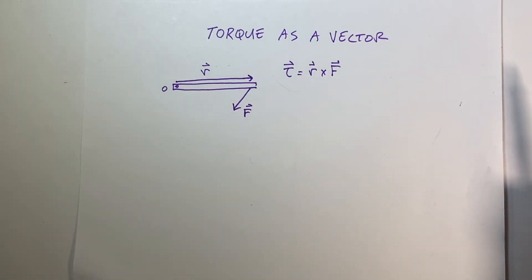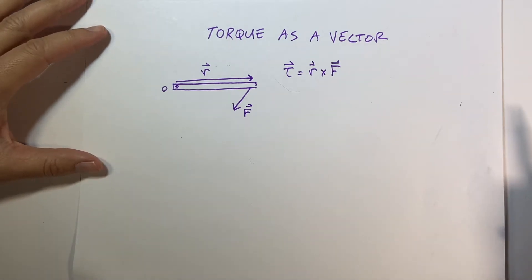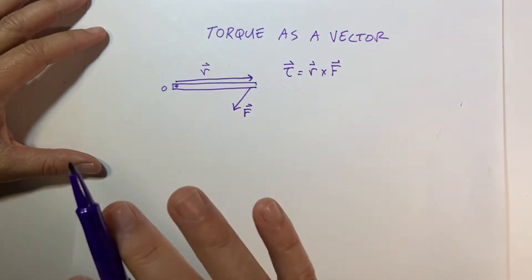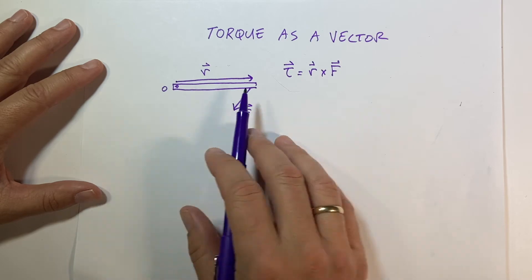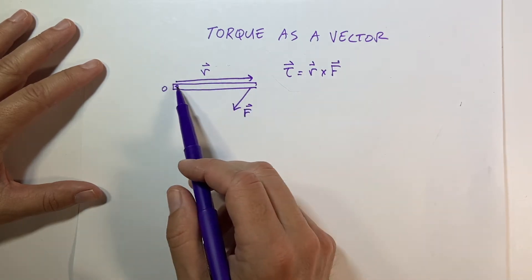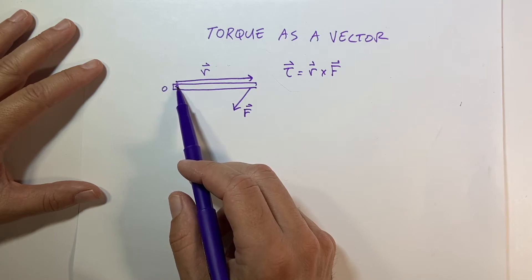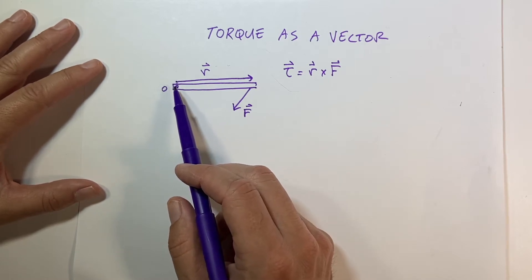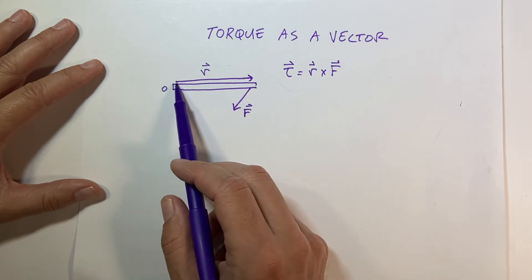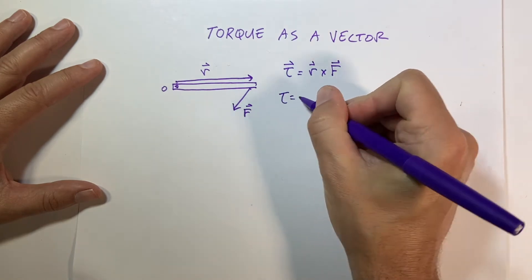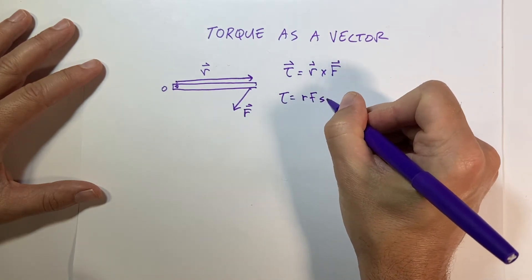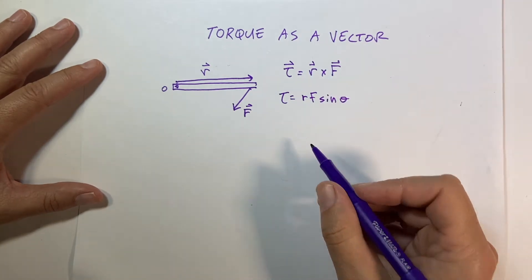A lot of times we just deal with torque as counterclockwise or clockwise, but torque is actually a vector, and a lot of times we need to take into account the vector nature of torque. Let's review the previous definitions of torque. If I have a beam and I apply some force over here, this is the vector from the point of rotation to where the force is applied. The torque is equal to r·f·sin(θ).